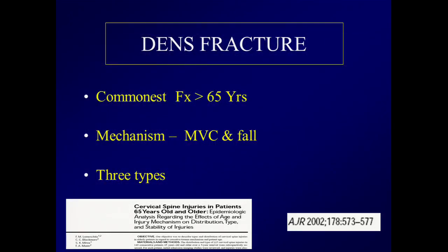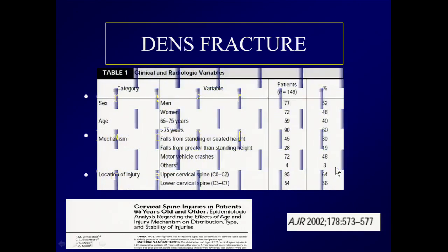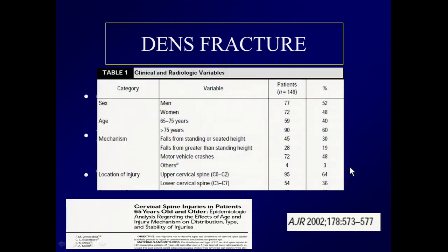As you can see, there are two predominant mechanisms by which this injury occurs: motor vehicle collisions and falls. Going back to the same paper and looking at one of their published tables, you can see falls dominate as much as motor vehicle collisions. This was in 2002, but I think now falls will be the commonest mechanism. What is really scary is that a good percentage of people just fell from the standing or seated position and got a dens fracture.